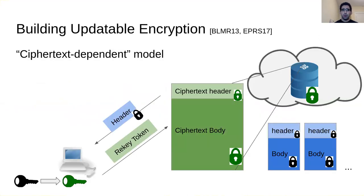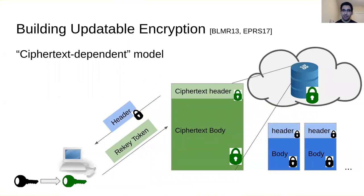All of our updatable encryption schemes are in the ciphertext-dependent model. In this model we break a ciphertext into a constant-sized ciphertext header and a ciphertext body. During a key update, the server sends the header to the client — which doesn't violate compactness since the header is constant-sized — and the client uses it to generate a re-key token that is sent to the server to perform the re-encryption.